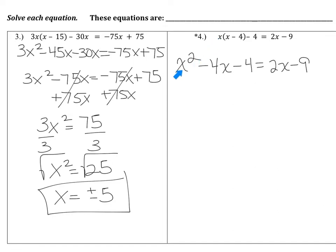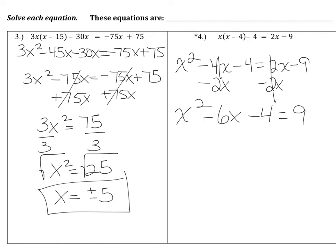When you distribute the x in problem four, you get x squared minus 4x minus 4 equals 2x minus 9. If I subtract 2x from both sides, I'm left with x squared minus 6x minus 4 equals negative 9. Then adding 4 to both sides gives x squared minus 6x equals negative 5.